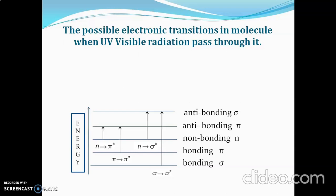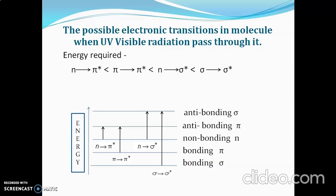Considering their energy requirements: n to pi anti-bonding requires less energy than pi to pi anti-bonding, which requires less energy than n to sigma anti-bonding, which requires less energy than sigma to sigma anti-bonding. So sigma to sigma anti-bonding requires the highest energy and n to pi anti-bonding requires the lowest energy.